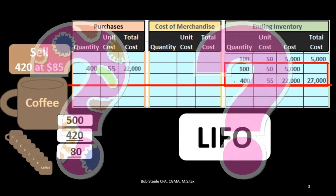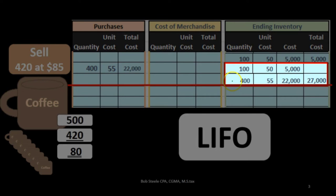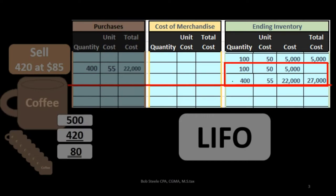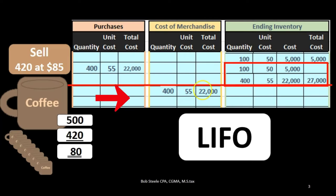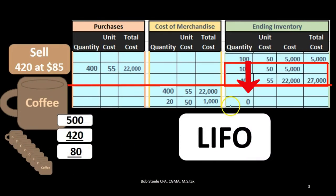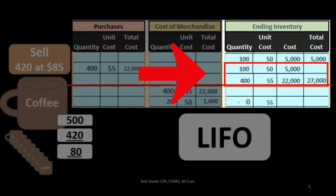Under last in first out, we take the last ones purchased first. The 400 units purchased at $55 are treated as the first units sold, so we wipe out that entire batch — 400 units at $55 for $22,000. We then need another 20 units to reach the 420 sold, and we assume those came from the earlier batch at $50, adding $1,000.